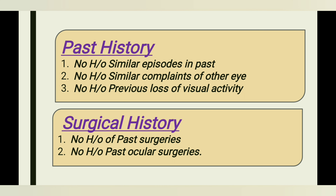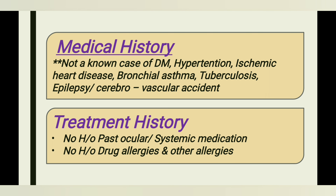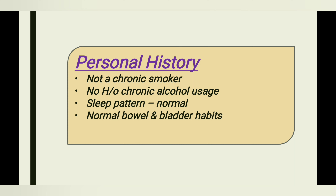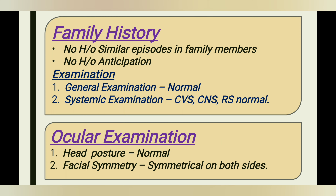Past history: no history of similar episodes, no history of similar complaints in the other eye, no history of previous loss of visual acuity. Surgical history: no history of past or ocular surgeries. Medical history: she is not a known case of diabetes mellitus, hypertension, ischemic heart disease, bronchial asthma, tuberculosis, epilepsy, or cerebrovascular accident. Treatment history: no past ocular or systemic medications and no drug allergies. Personal history: not a chronic smoker, no chronic alcohol use, sleep pattern normal, normal bladder and bowel habits. Family history: no similar episodes in the family.